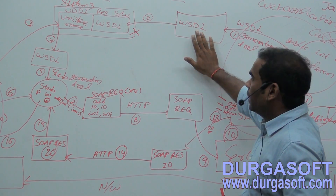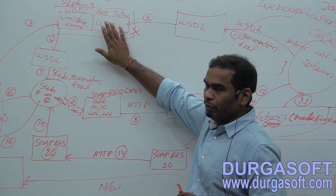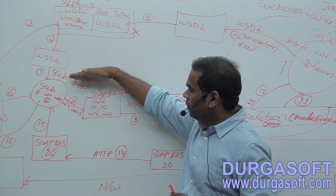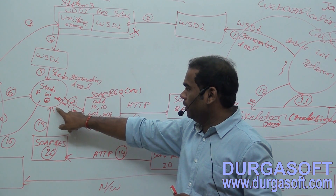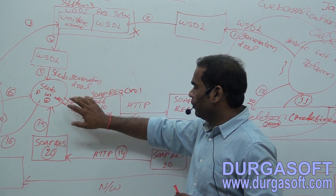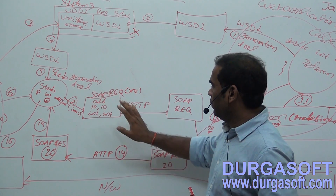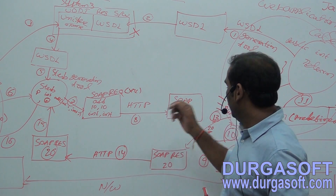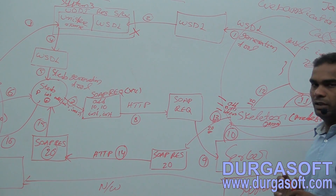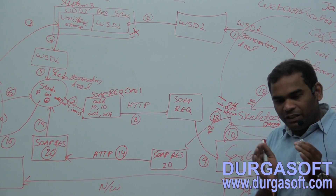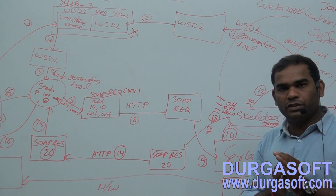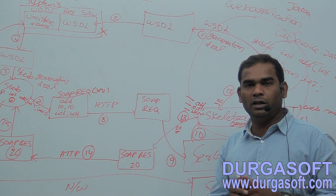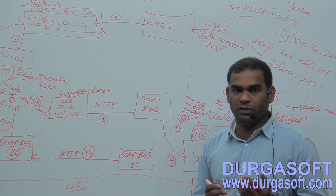The six components are: first, WSDL; second, the UDDI registry; third, the stub generation tool; fourth, the stub; fifth, SOAP; and sixth, the HTTP protocol. If we have these components, we can easily communicate between two interoperable applications.